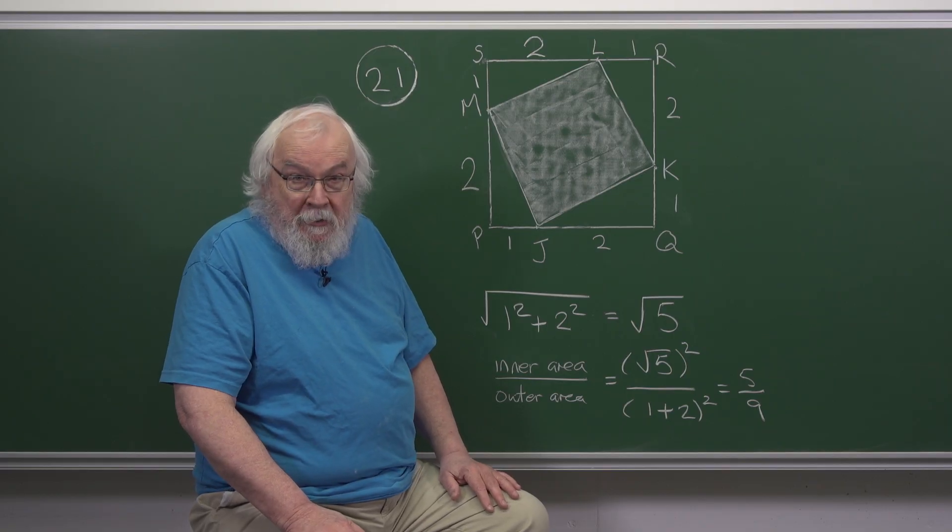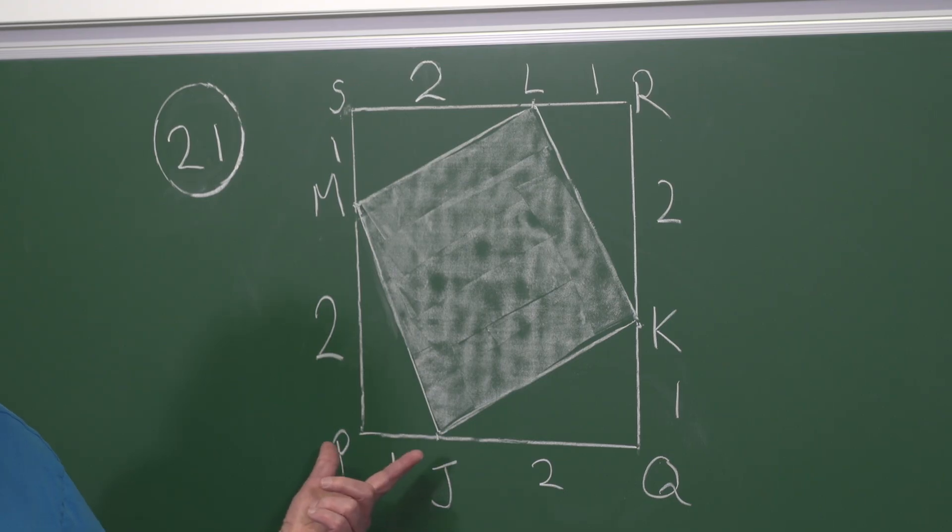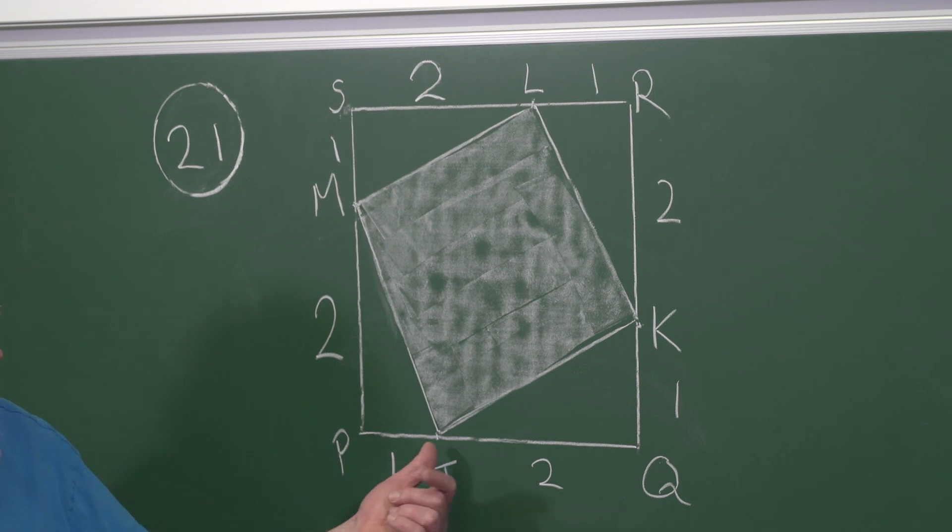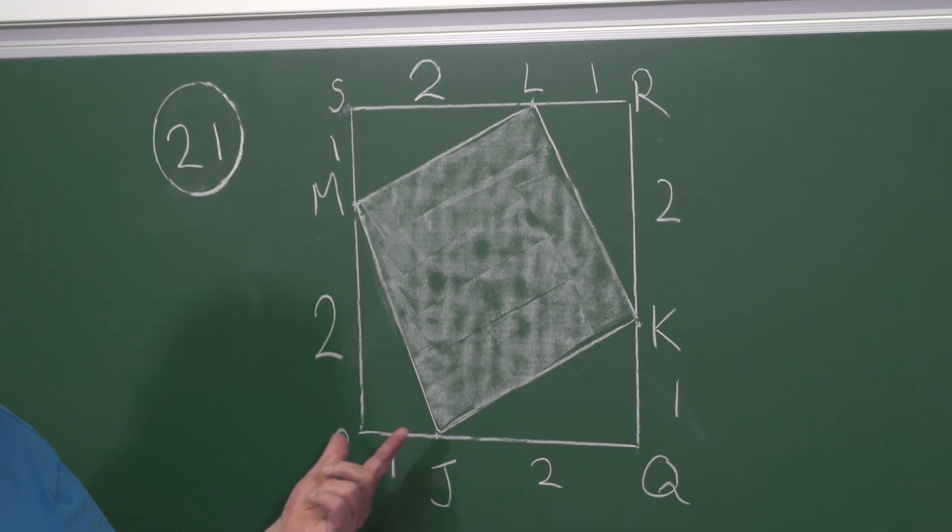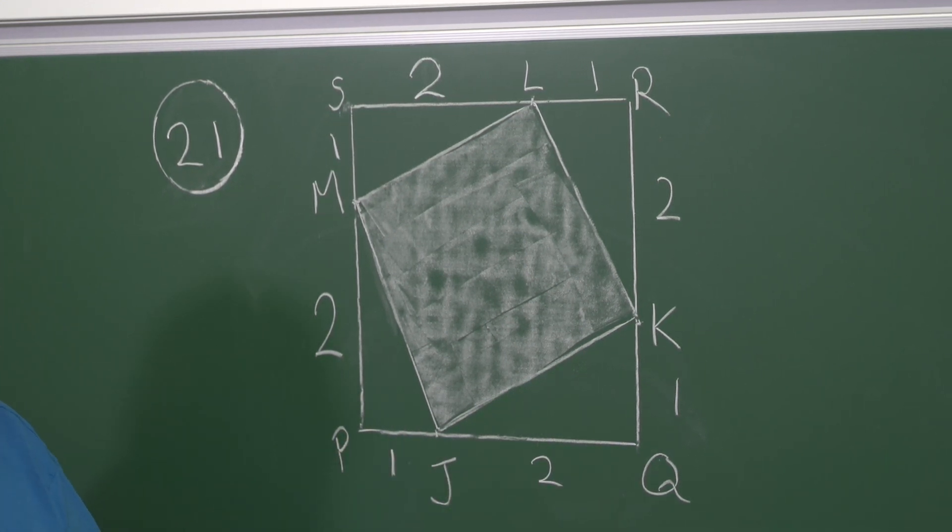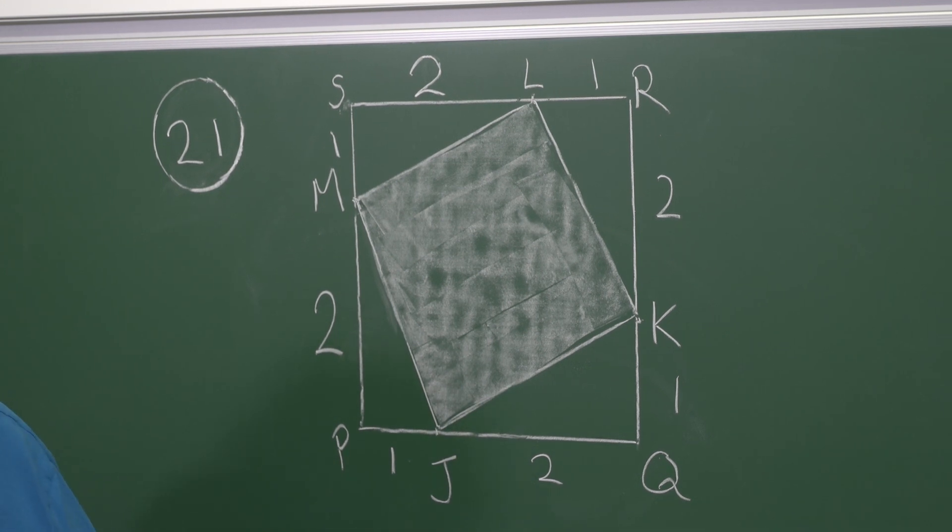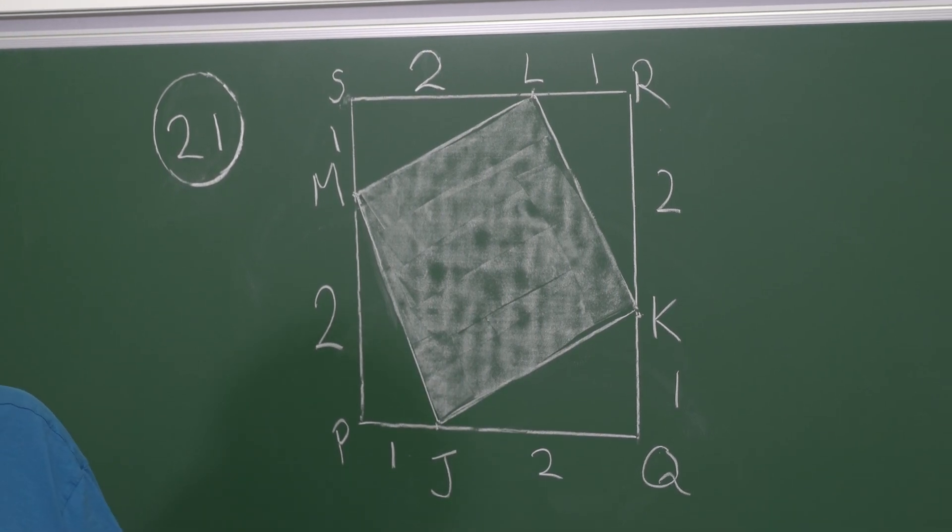So let's choose our units so that the distance like that is 1 and the distance like that is 2, so that this distance PJ is one-third of PQ. And similar things happen on the other sides.